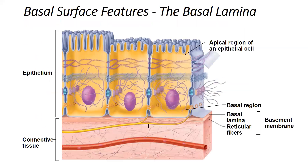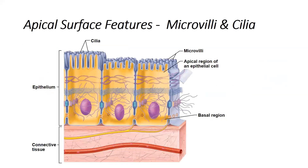Looking at this image, we can see that cilia are longer whereas microvilli are shorter. Cilia are the hair-like projections and are motile, whereas microvilli are the finger-like projections and are not motile. Cilia are found in the reproductive tract and the respiratory tract, while microvilli are found in the kidneys and the gastrointestinal tract.